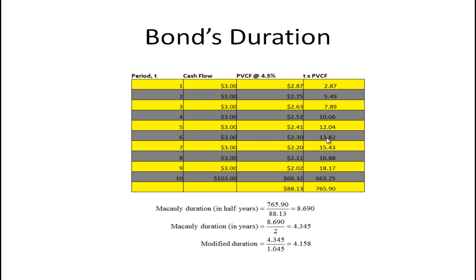The bond's duration can also be calculated by taking the present value of all cash flows, multiplying each by t, summing them up, and dividing by the price of the bond. That gives us Macaulay duration in half-years of 8.690. Macaulay duration in years is that divided by two: 4.345.